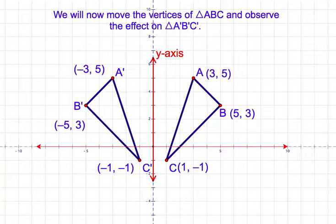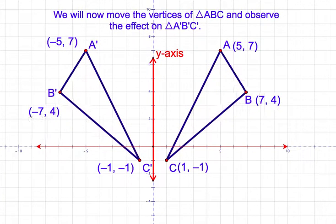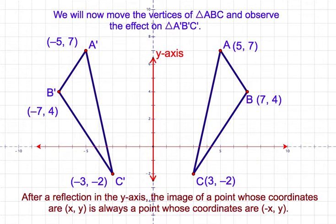We will now move the vertices of triangle ABC and observe the effect on triangle A'B'C' after reflection in the y-axis. After reflection in the y-axis, the image of a point whose coordinates are (x, y) is always a point whose coordinates are (-x, y).